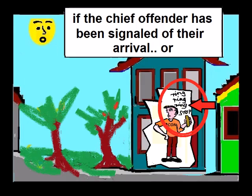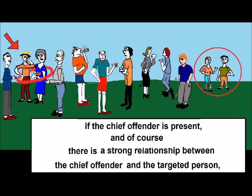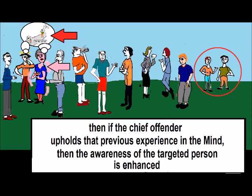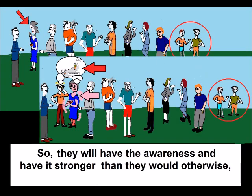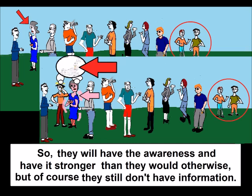But if the chief offender has been signalled of their arrival, or if the chief offender is present, and of course there's a strong relationship between the chief offender and the targeted person, then if the chief offender upholds that previous experience in the mind, the awareness of the targeted person is enhanced — is greater. So they will have the awareness and have it stronger than they would otherwise. But of course they still don't have information.